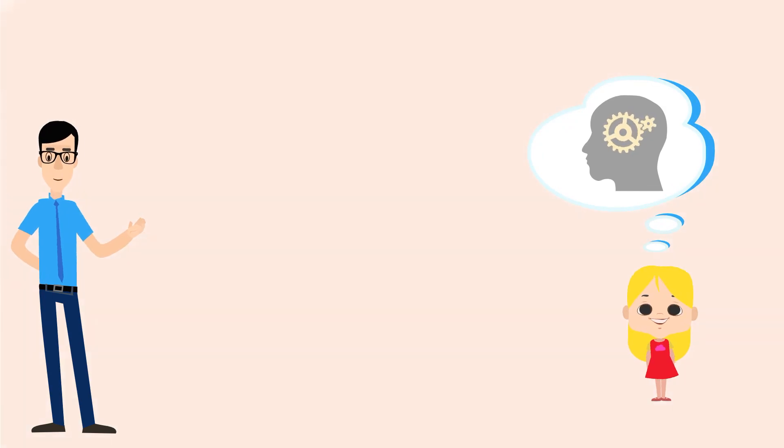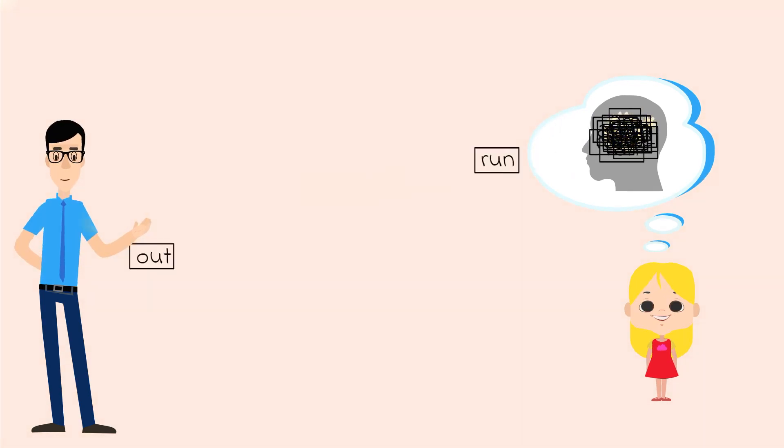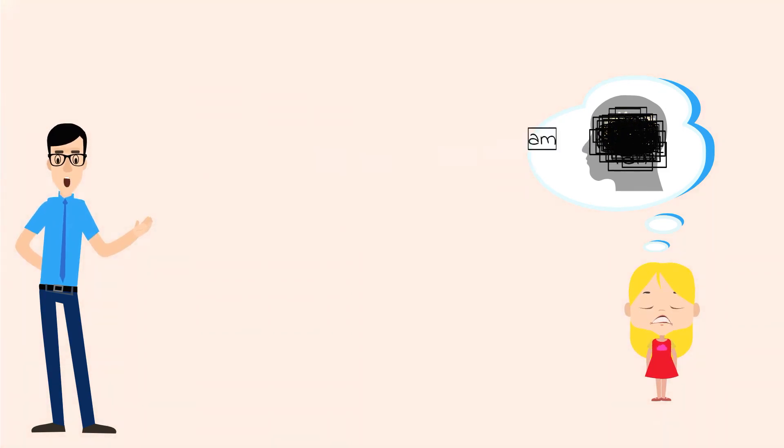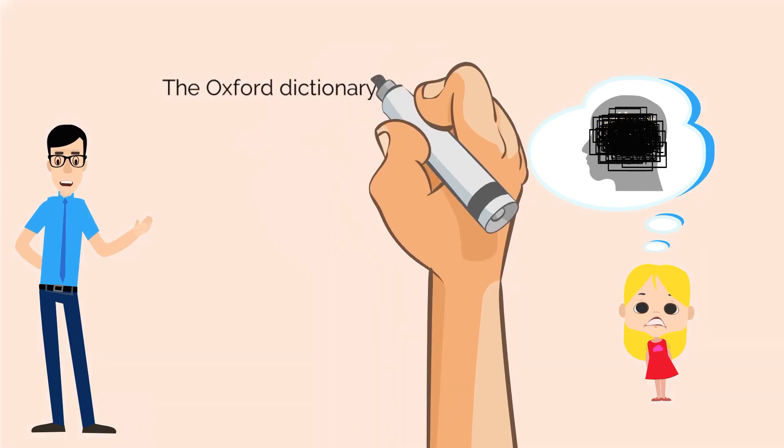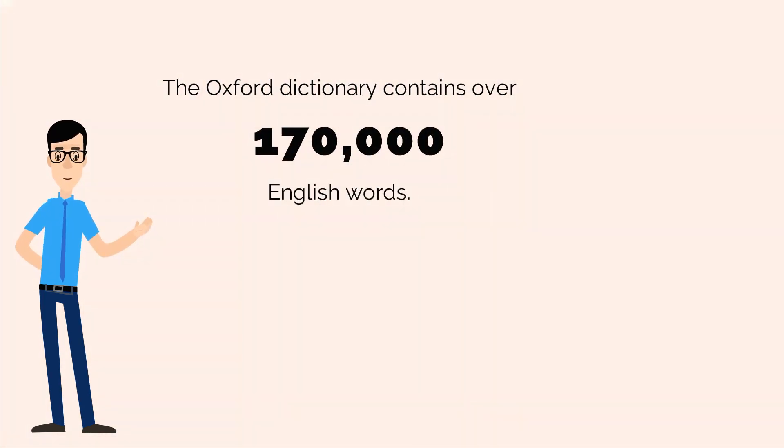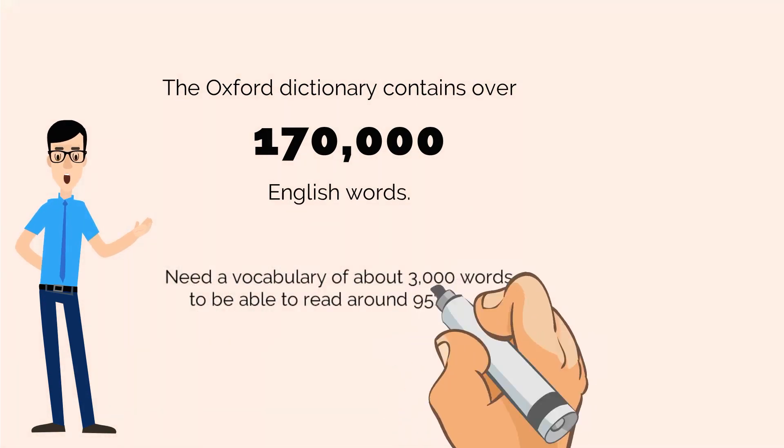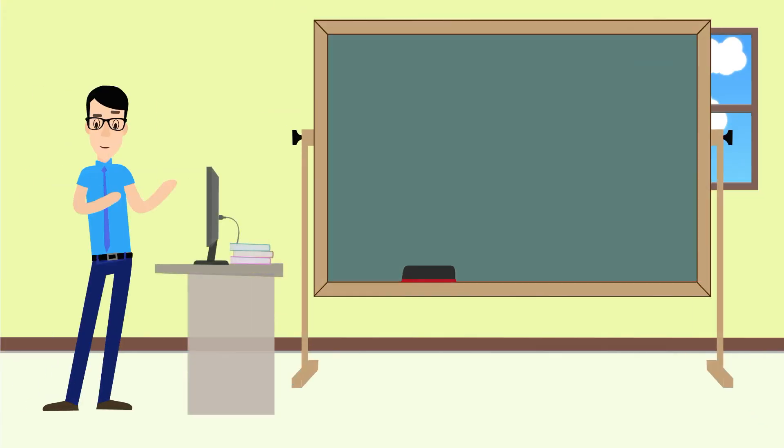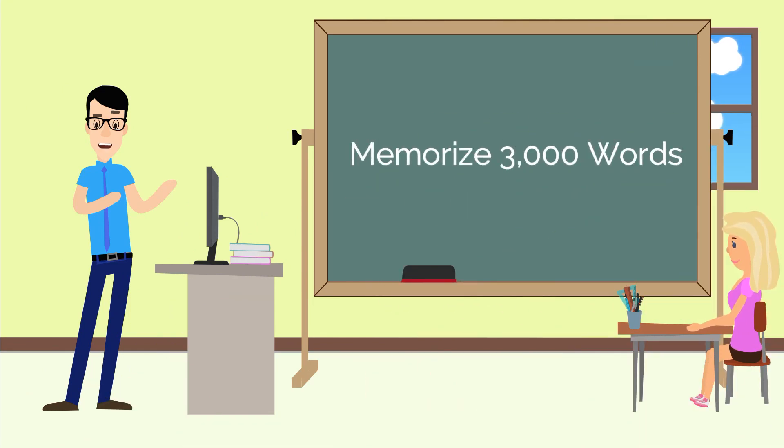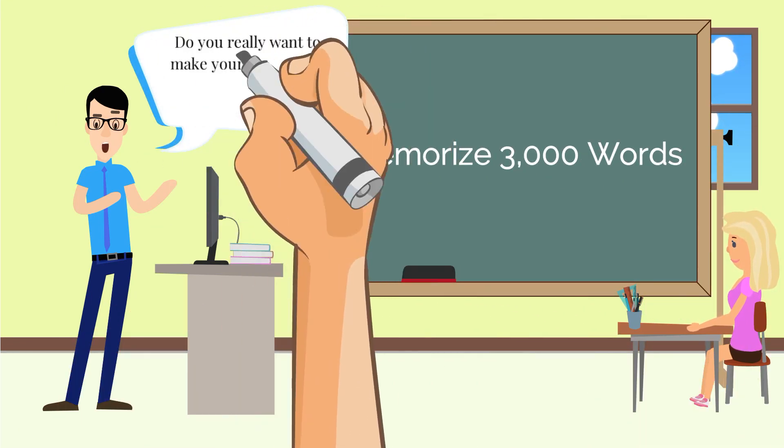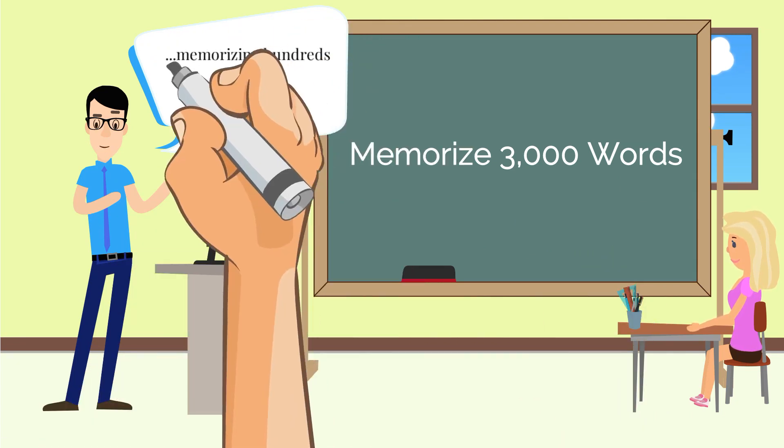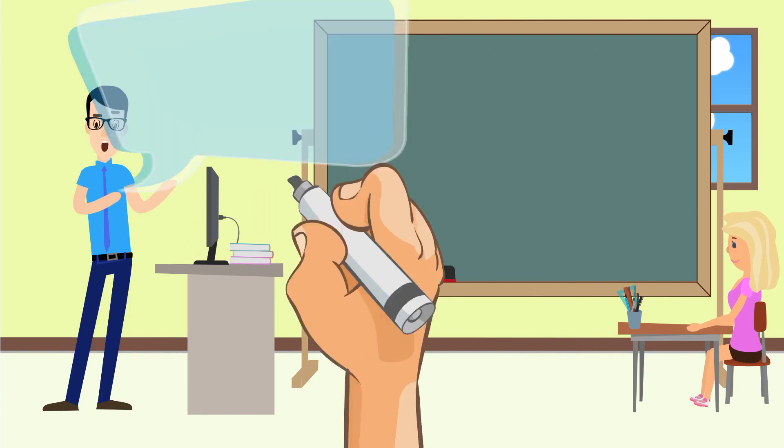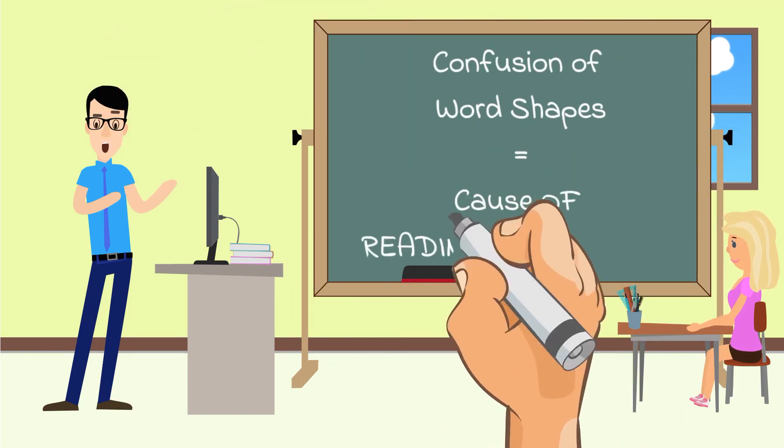This combined with school-taught reading strategies of guessing and skipping over unknown words, you can quickly see how and why so many of our children struggle daily with reading. Imagine this is your child trying to learn to read by memorizing sight words. Let's introduce 20 new words. So far, so good. Now, how about we teach 20 more words? Not too bad. How about 50 more? 100 more? 500 more? The Oxford Dictionary contains over 170,000 English words. You need to have a vocabulary of about 3,000 words to be able to read around 95% of all common texts. How successful do you think your child or anyone will be at memorizing 3,000 words? Besides, do you really want to make your child suffer through the confusion and frustration of memorizing hundreds and even thousands of words? The confusion of word shapes is often a cause of reading difficulties.